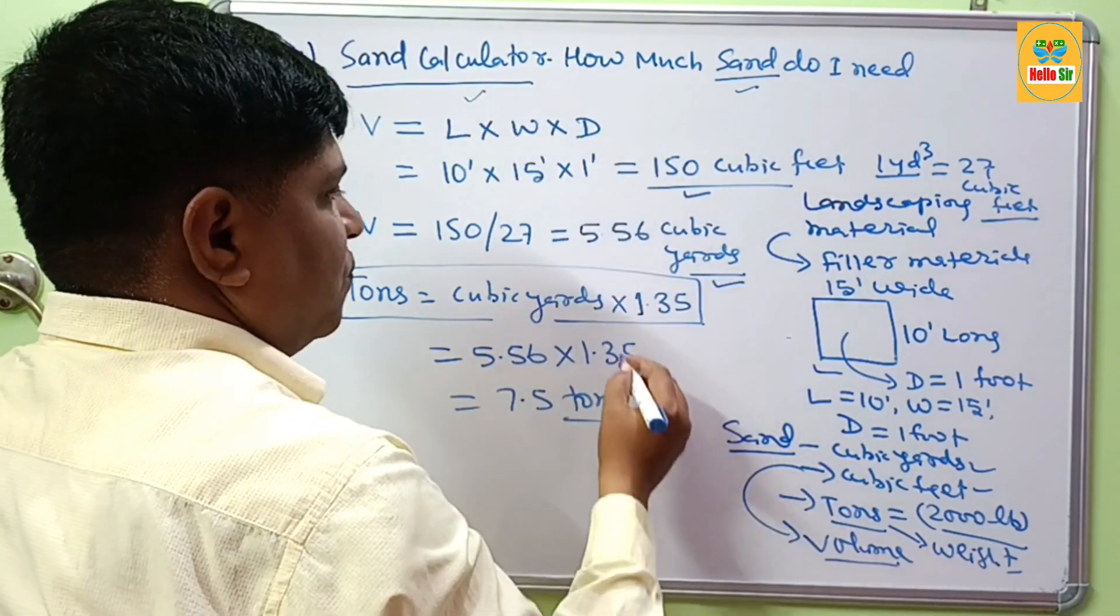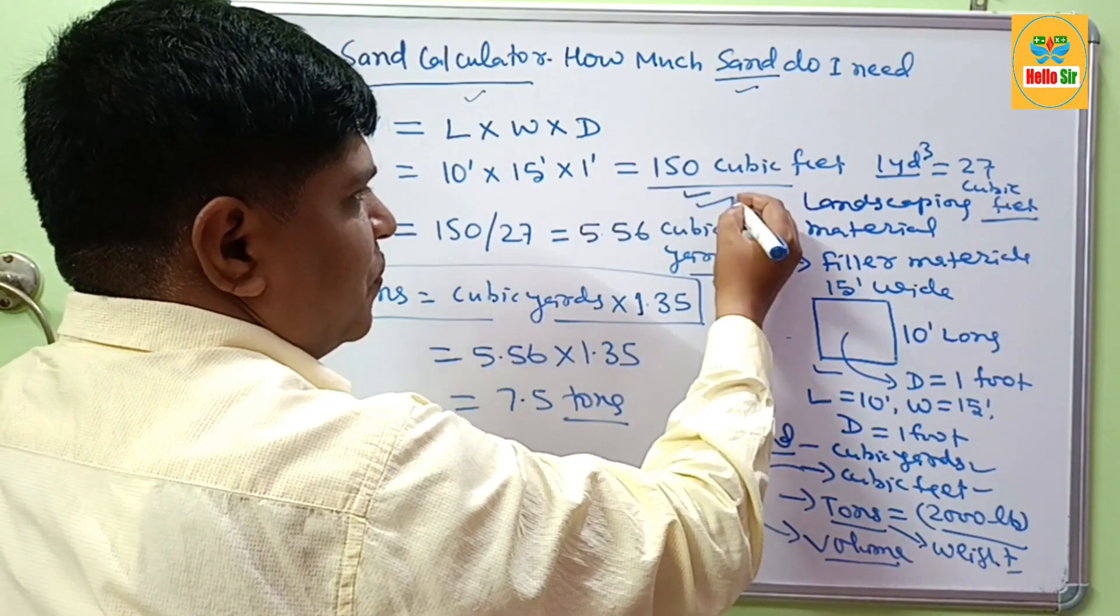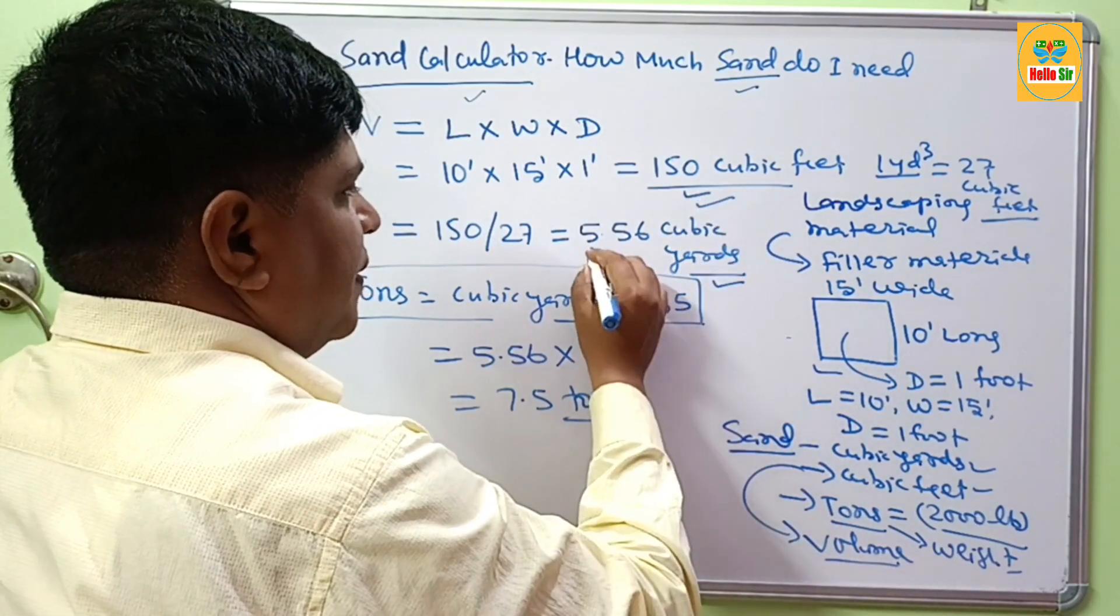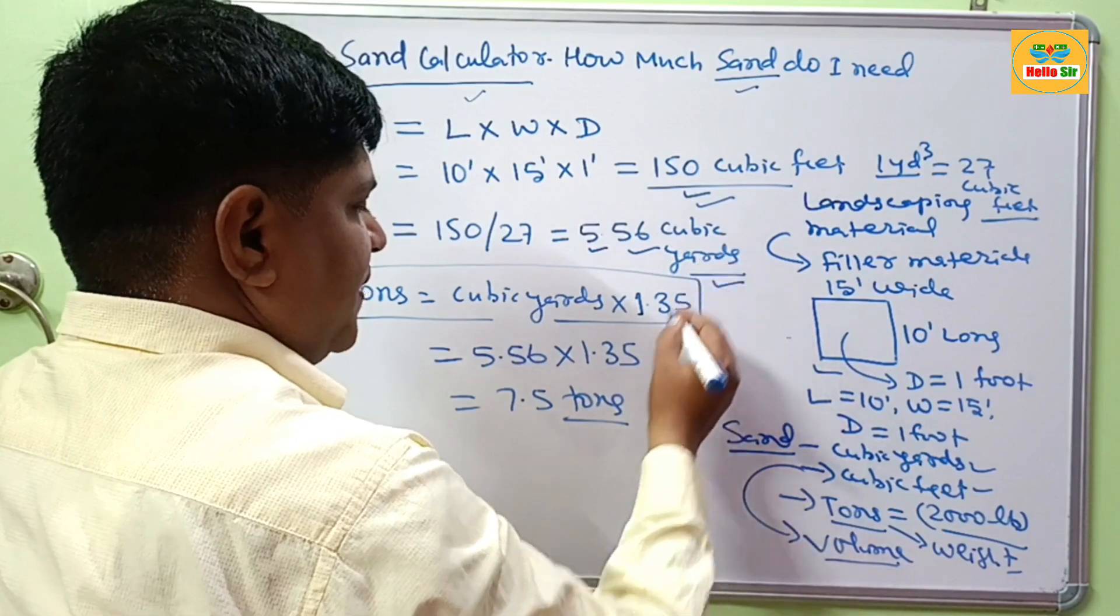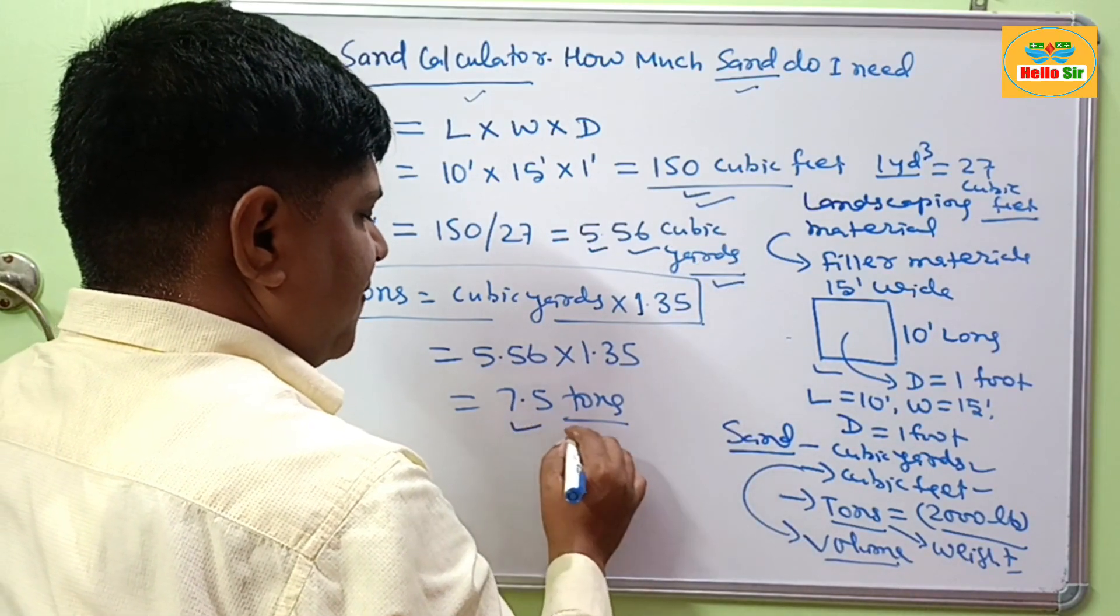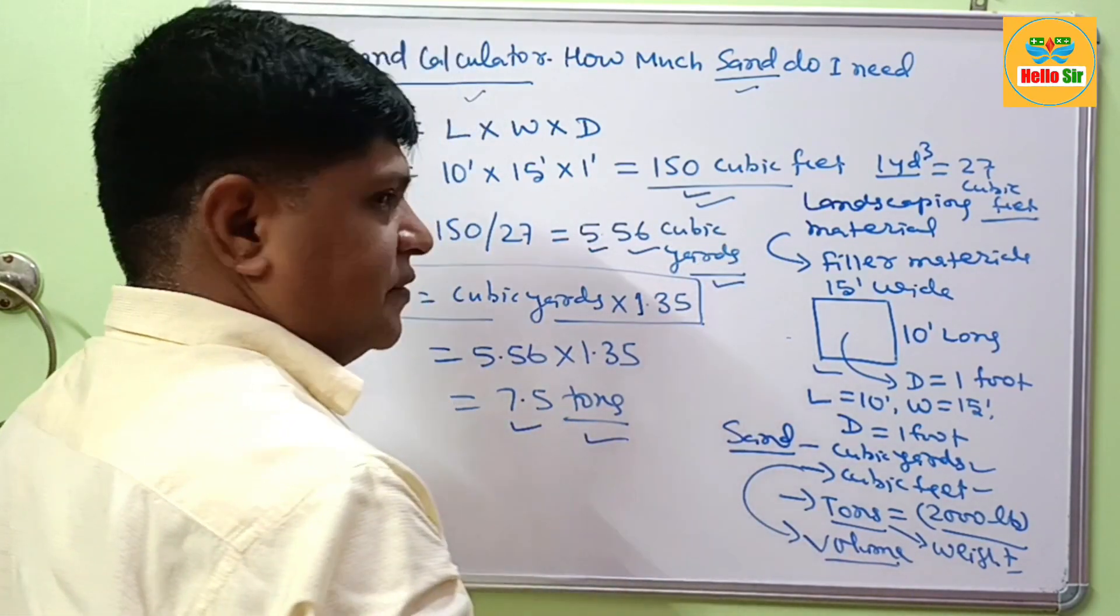How much sand do I need? You can use the sand calculator to find the sand quantity. This will come to 150 cubic feet, 5.56 cubic yards, or 7.5 tons. Thank you.